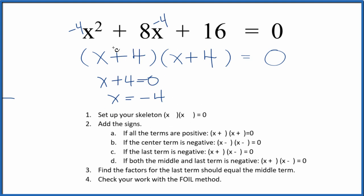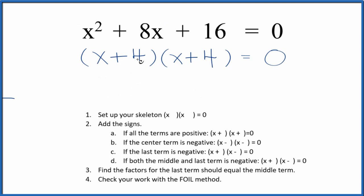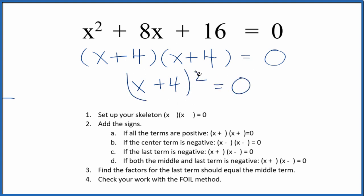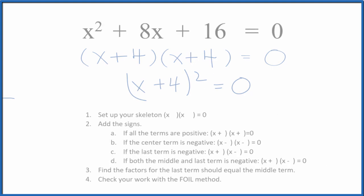That's how you factor the equation x squared plus 8x plus 16. There is one last thing we could do: since we have x plus 4 times x plus 4, we could write this as x plus 4 squared equals 0 — that's the same thing, just a little more reduced. This is Dr. B, and thanks for watching.